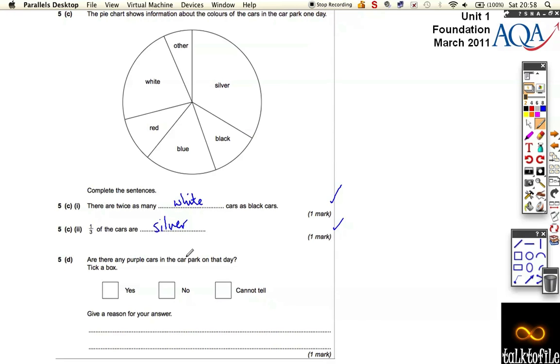And the last one says, Are there any purple cars in the car park on that day? Yes, no, cannot tell. Well, we can't tell because we do have an other section. There's no purple section here, but there is another section. But we're not sure. We don't know for sure whether it was or wasn't. What I wrote was you cannot tell which colour cars are in the other section. So there might be purple cars counted in there. There might not, but we just cannot tell.